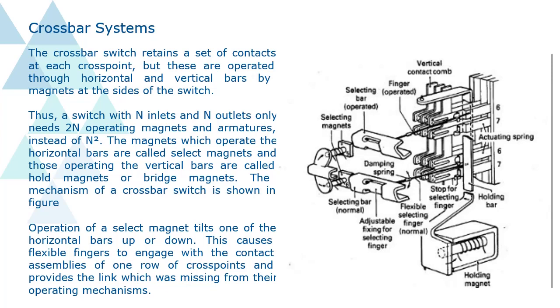The mechanism of a crossbar switch is shown in figure. Operation of a select magnet tilts one of the horizontal bars up or down. This causes flexible fingers to engage with the contact assemblies of one row of crosspoints and provides the link which was missing from their operating mechanisms.